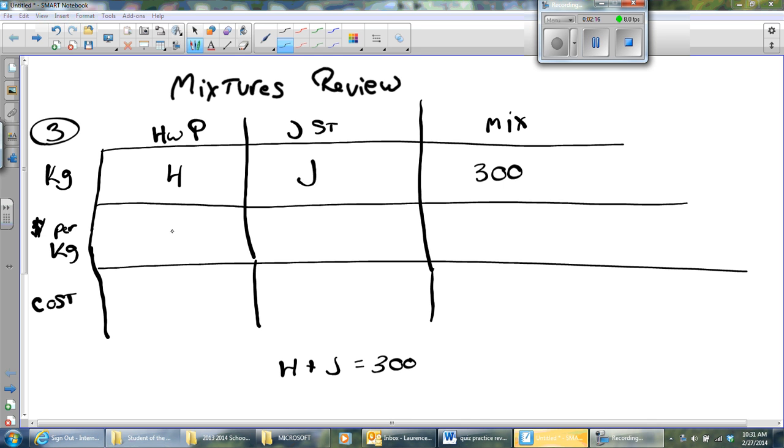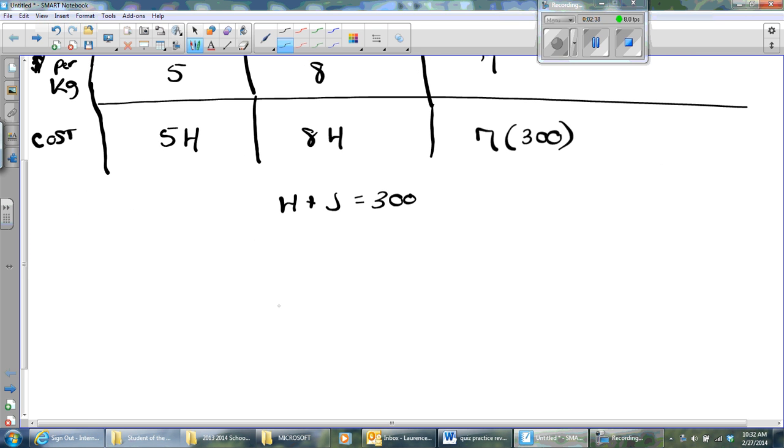The cost is $5 here, $8 here, and we want the mixture to cost $7. That's the price per kilogram. How much does it cost to use them? It'll cost $5 times the number of pounds plus $8 times the number of pounds, and it costs $7 times the number of pounds. So our second equation is 5H plus 8J equals 2100.